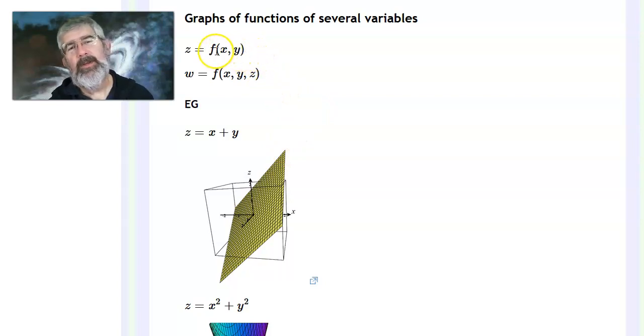In the previous video, I was very careful not to write like z equals f of x, y. I would just say f of x, y equals a function and give the formula for how to calculate that function. Now I'm going to start writing this z equals f of x, y, because I want to look at graphs. I want to think about inputs and outputs and give all the variables names.